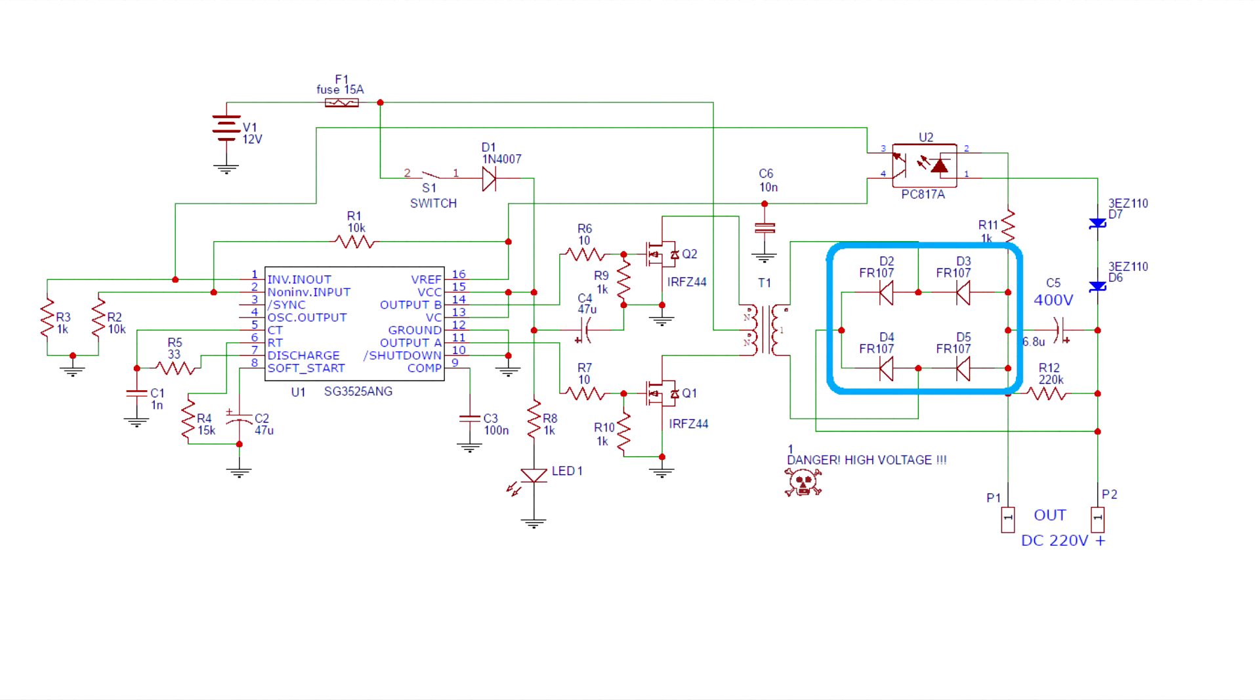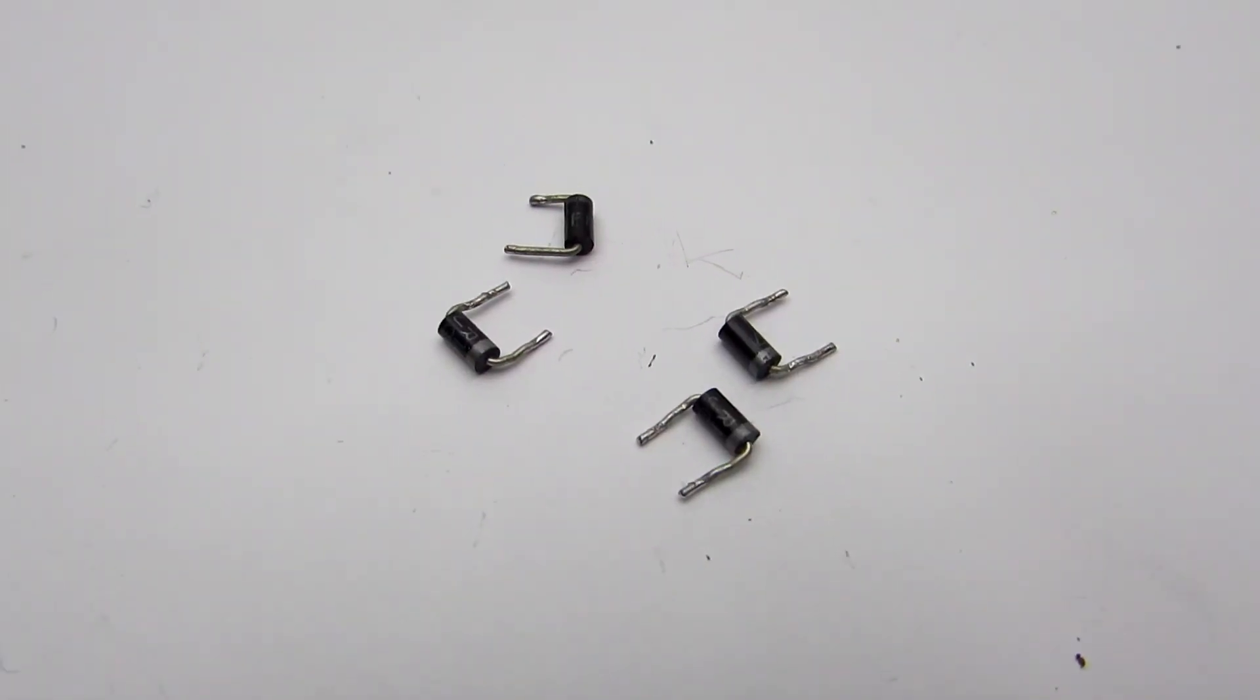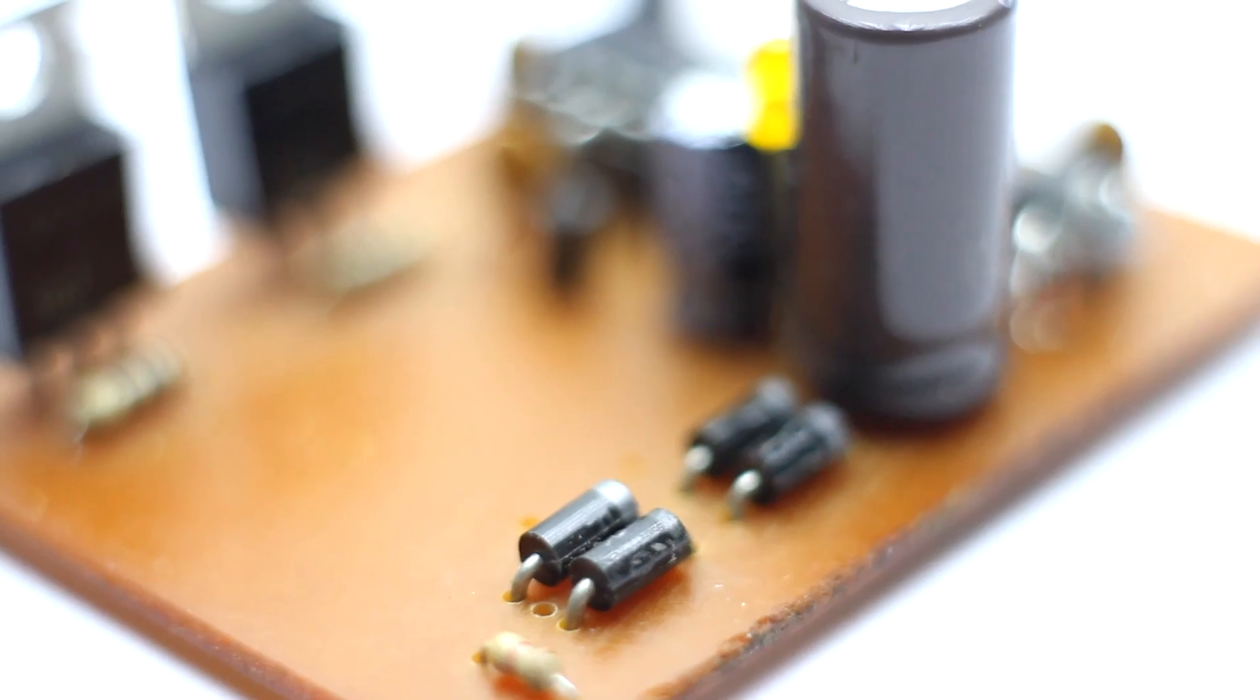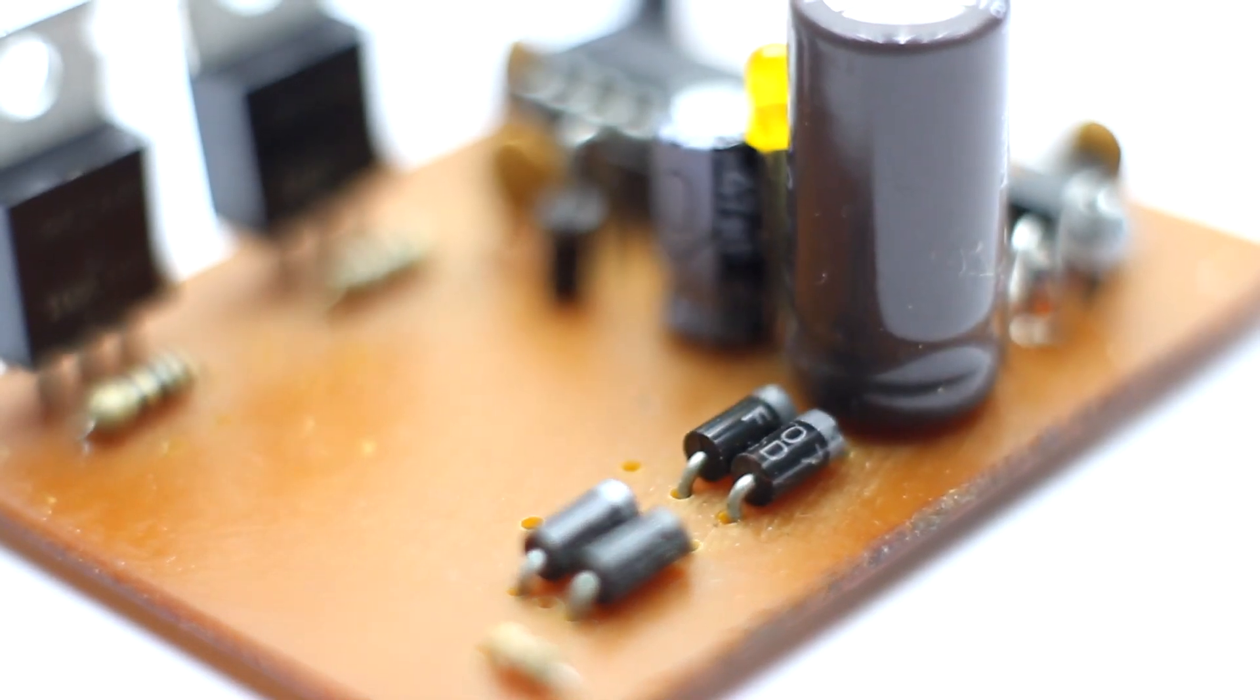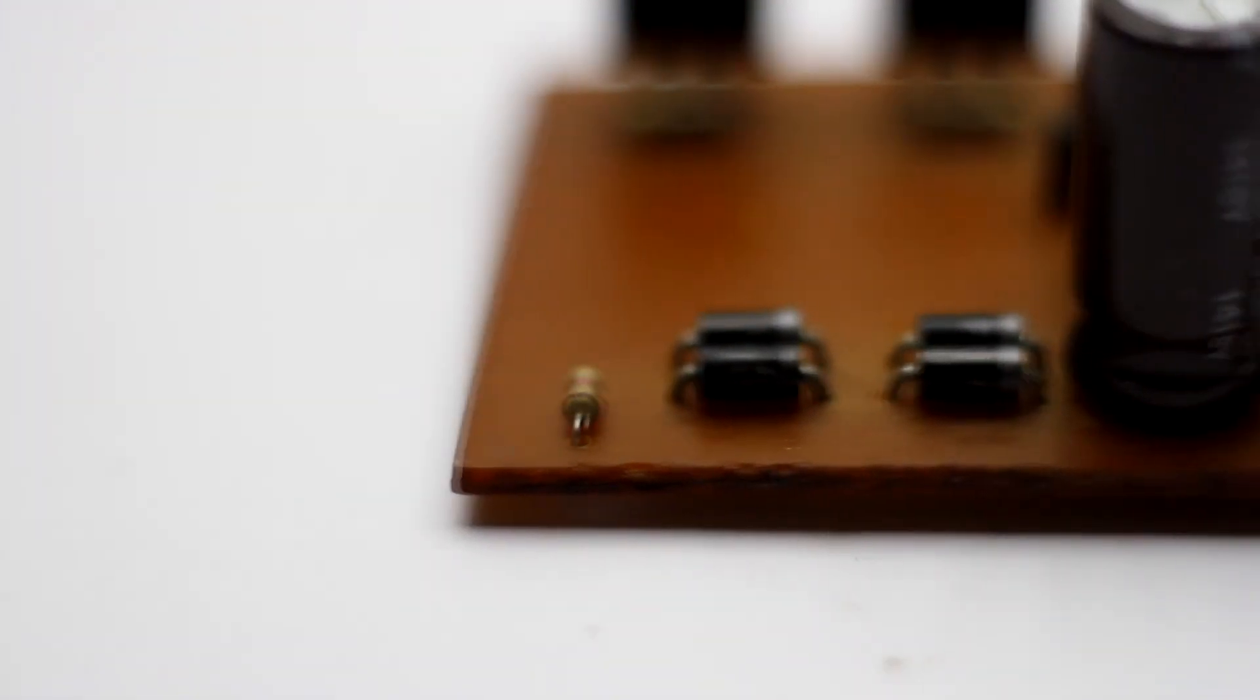At output used a full-wave rectifier based on FR107 pulse diodes. Any impulse or high-speed diodes with a current of not less than 1 Amper and a reverse voltage of at least 400 Volt are suitable.